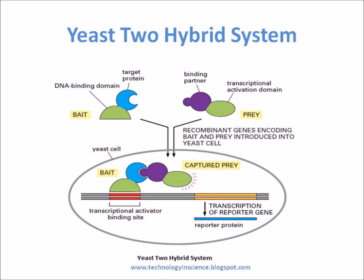Through the two-hybrid system, a protein linkage map has been generated for most of the 6,000 proteins in yeast, and similar projects are underway to catalog the protein interactions in C. elegans and Drosophila.